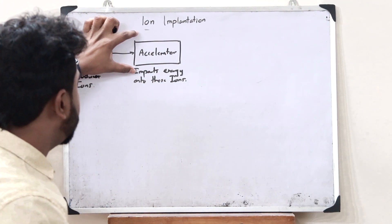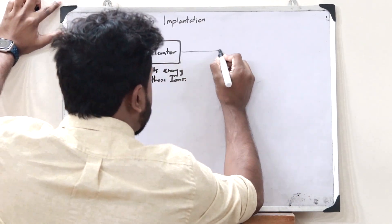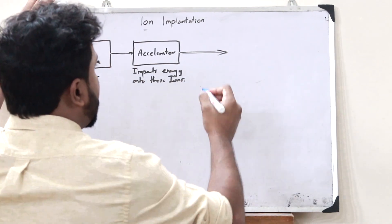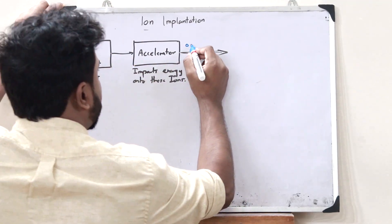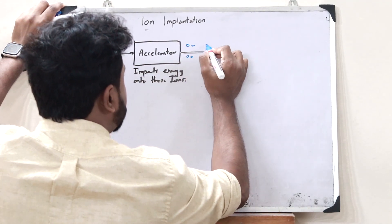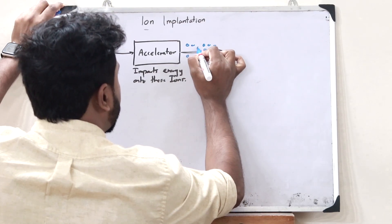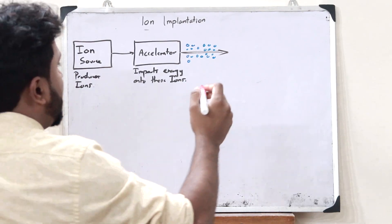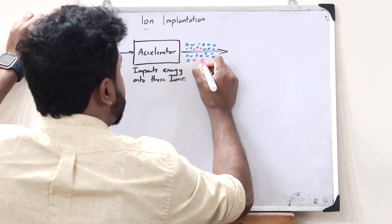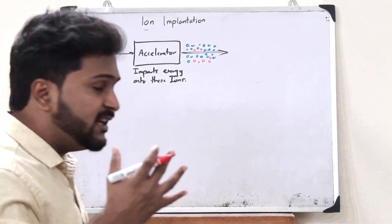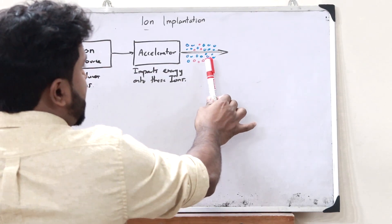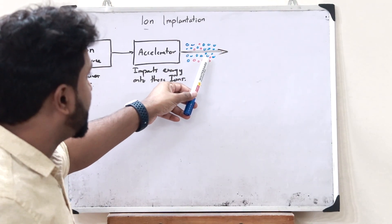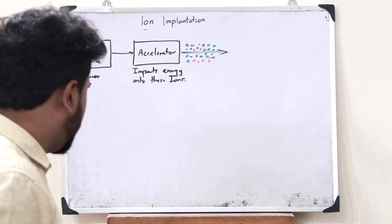What we observe is that these ions are accelerated very quickly. Now, when these ions are accelerated, there will be ions provided from this particular ion source — let the blue ones be the ions that we actually need to impart on the particular wafer. But along with the ions produced from the ion source, there will be certain impurities as well. Let the red ones be the impurities. Our main agenda is to now separate these impurities from the ions that were actually produced — that is, remove the red ions and keep the blue ions.